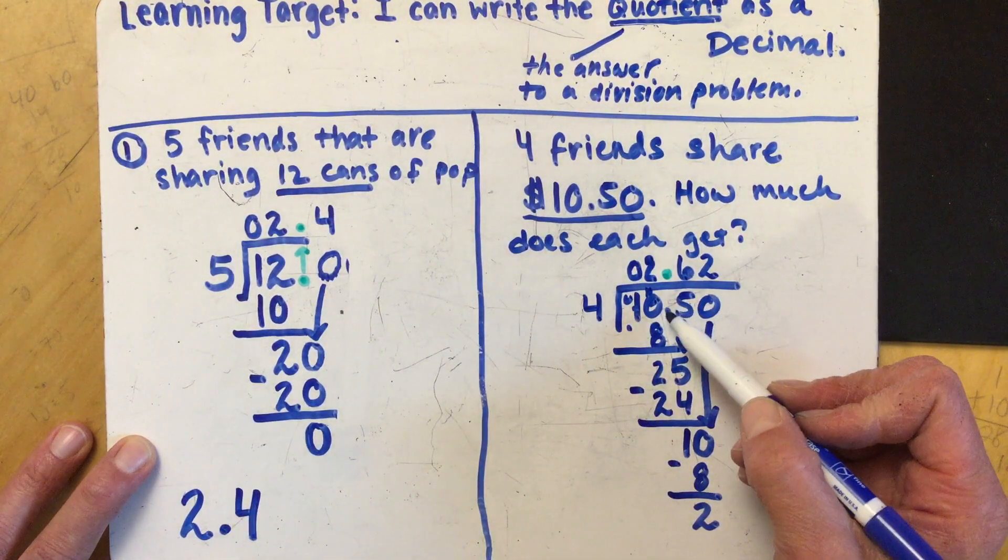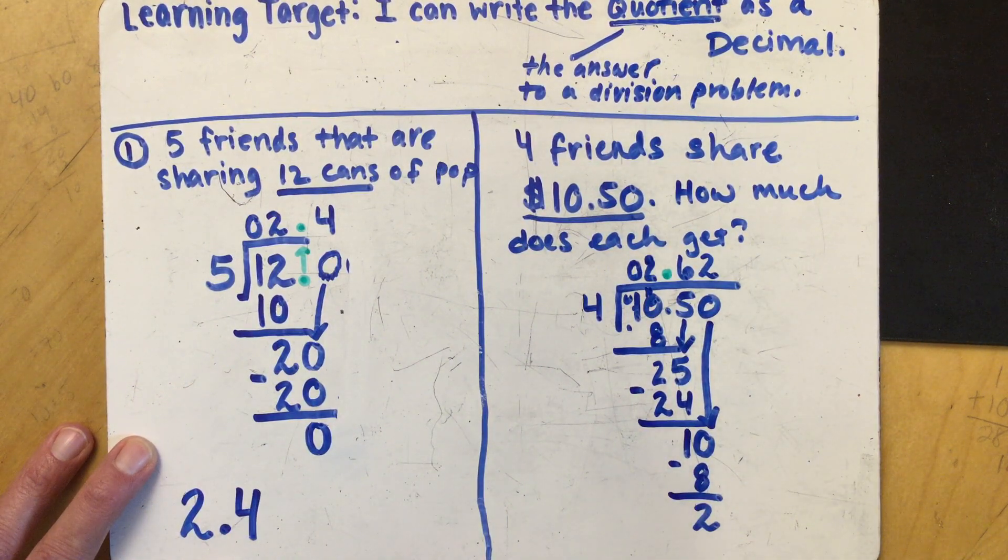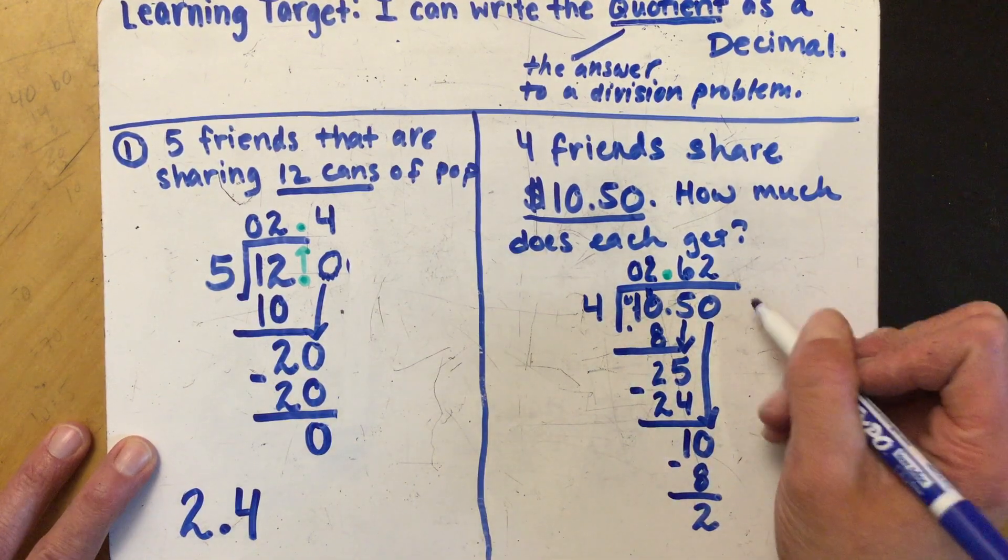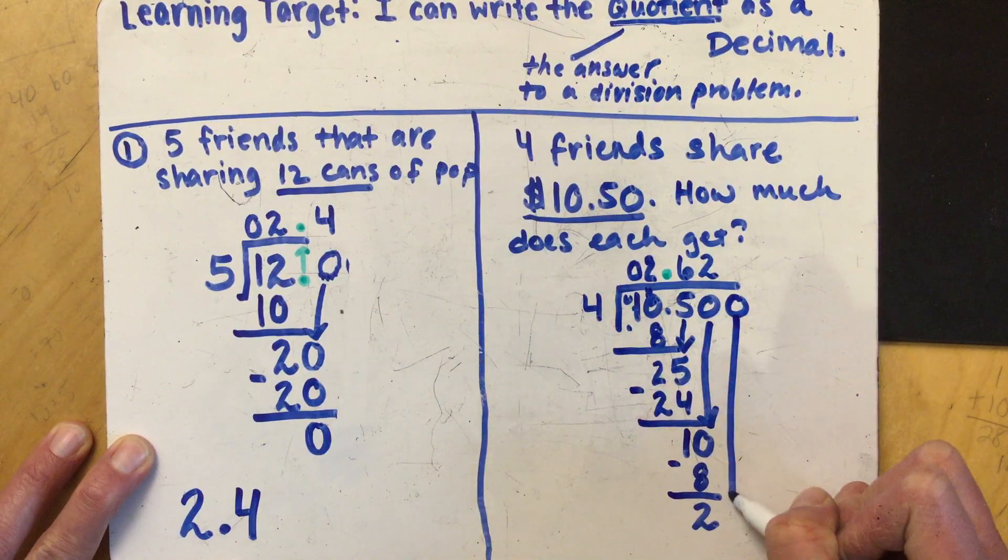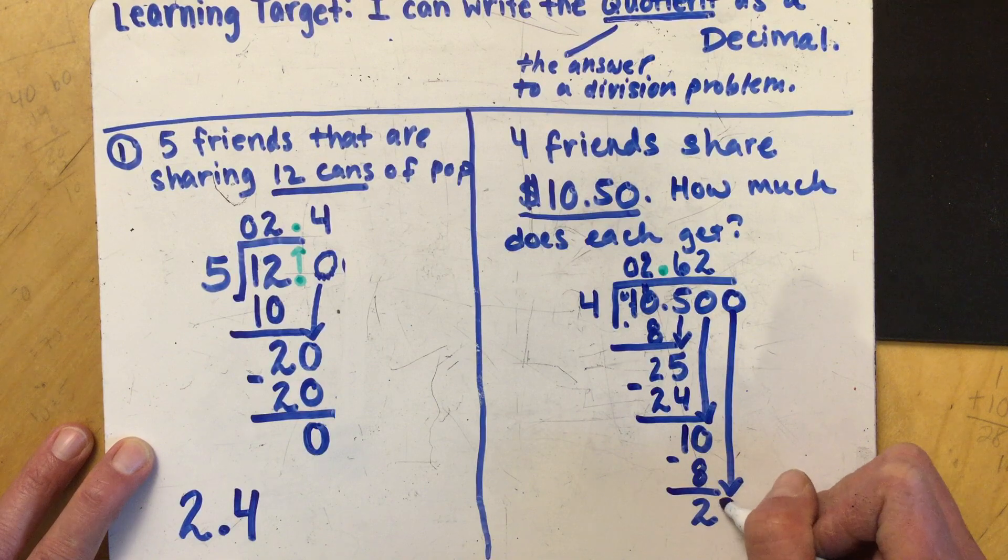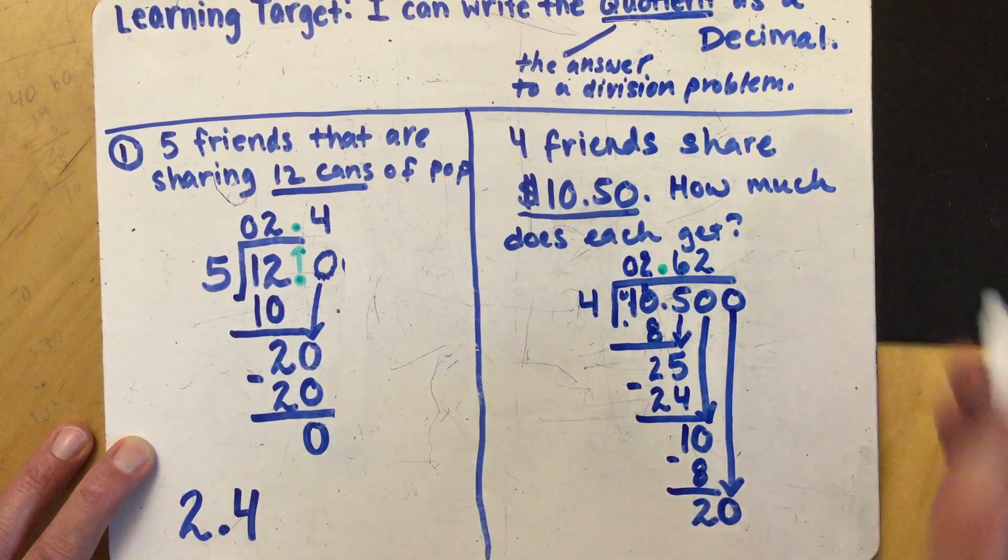However I also have already had one decimal point in this problem so I don't have to worry about adding any other decimal points. As long as there's just one decimal point we're good to go. We don't add more than one decimal point. We can however keep adding zeros until we don't have any remainders. Once again adding zeros after decimal points does not change the value of a problem. Four goes into twenty five times.